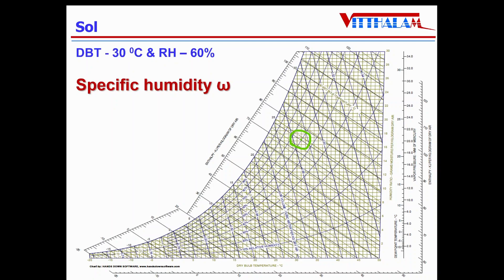The first property is the specific humidity. As I said, specific humidity is on y-axis. So from this point draw a horizontal line parallel to x-axis where it intersects, the reading on the y-axis will be the specific humidity, and that is 17 grams per kg of dry air.